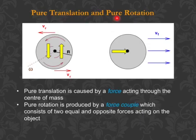Pure translation and pure rotation. This is pure translation where a force acts through the center of mass of this object to cause this object to move forward, but it does not make this object rotate or spin. If this force is off-center, then it will cause this object to spin.